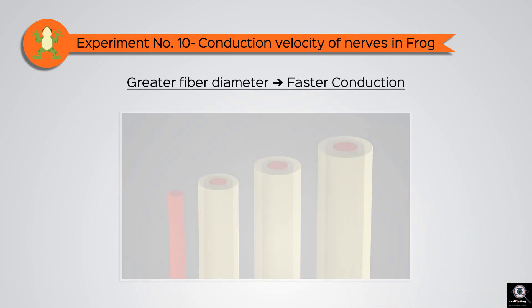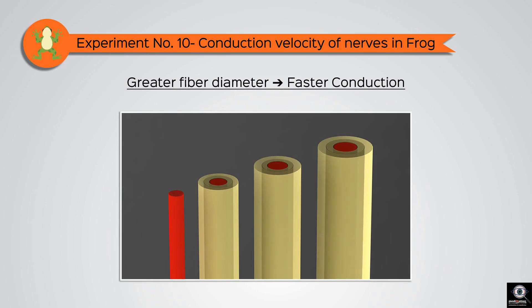The greater the fiber diameter, faster is the conduction through the nerve.